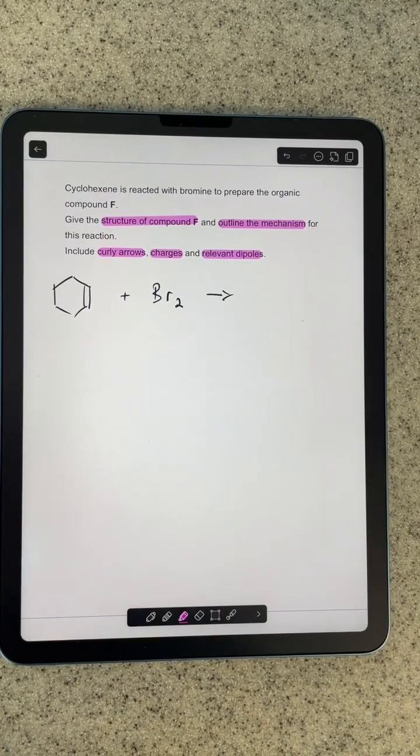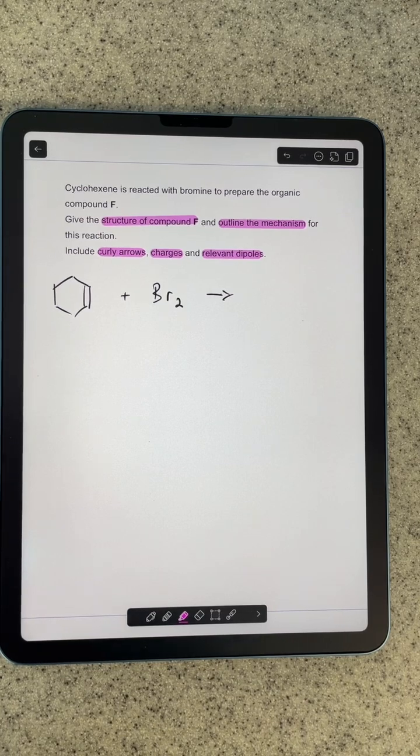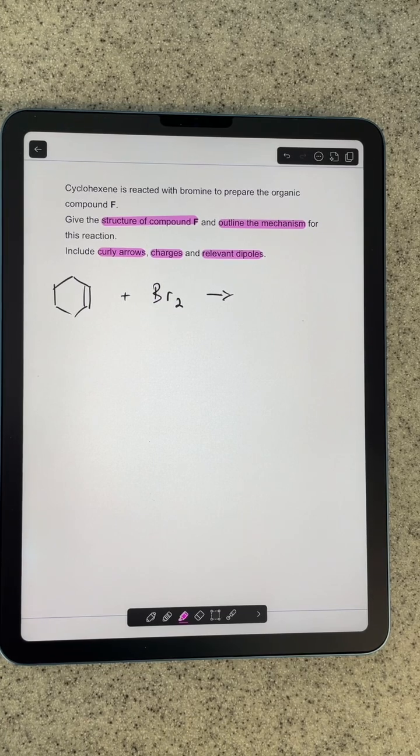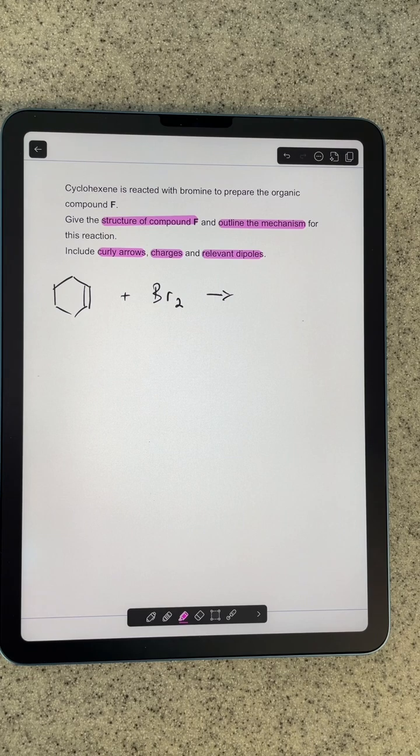The question is about the reaction between cyclohexene and bromine to prepare compound F. The first thing we've got to do is give the structure of compound F, then we've got to go through the mechanism.